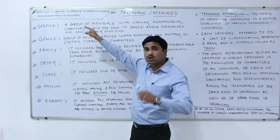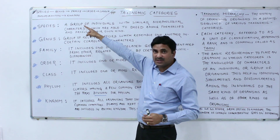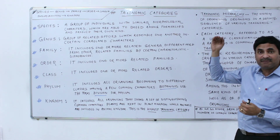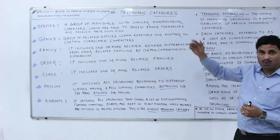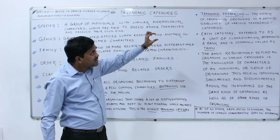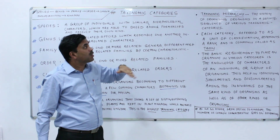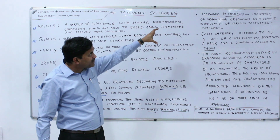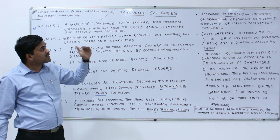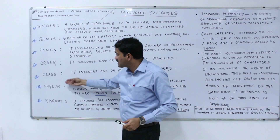And then at last, the kingdom. So the highest taxonomic category is the kingdom and the least category is the species. This represents the taxonomic hierarchy: species, then genus, then family, then order, then class, then phylum or division, and then the kingdom. Taxonomic hierarchy is the system of organizing organisms in a definite sequence of various taxonomic categories.